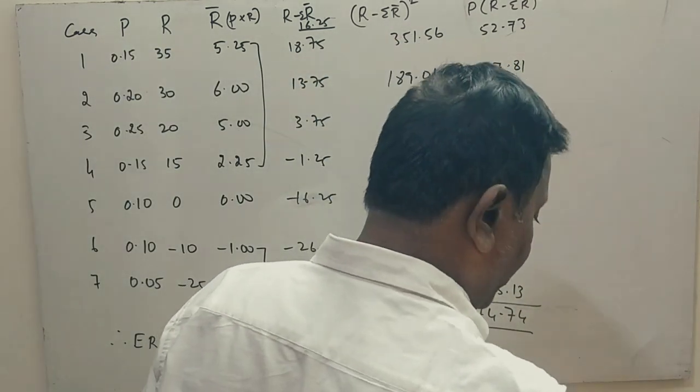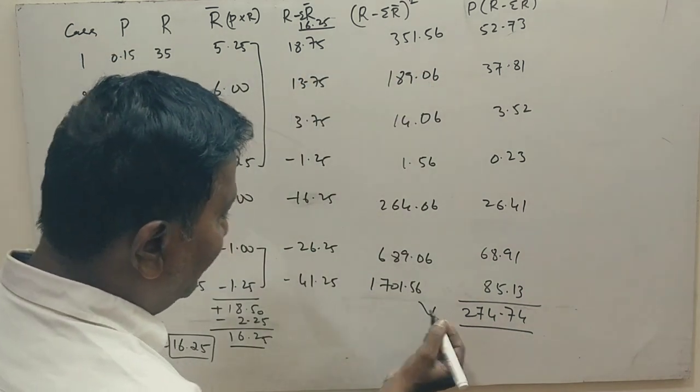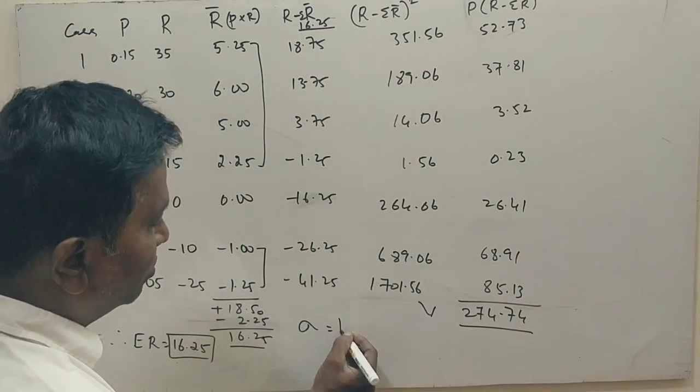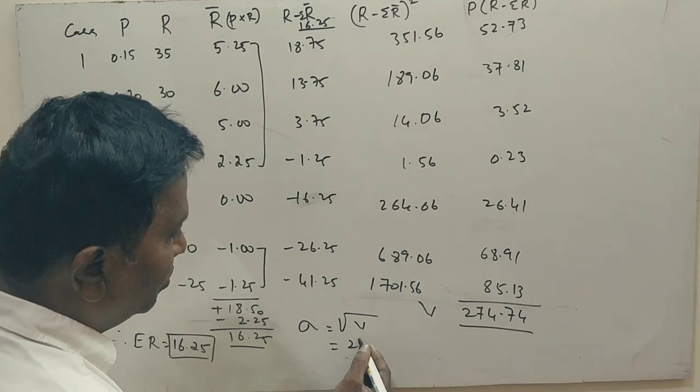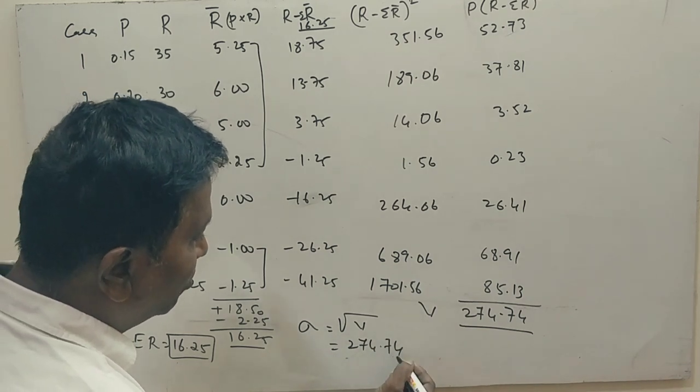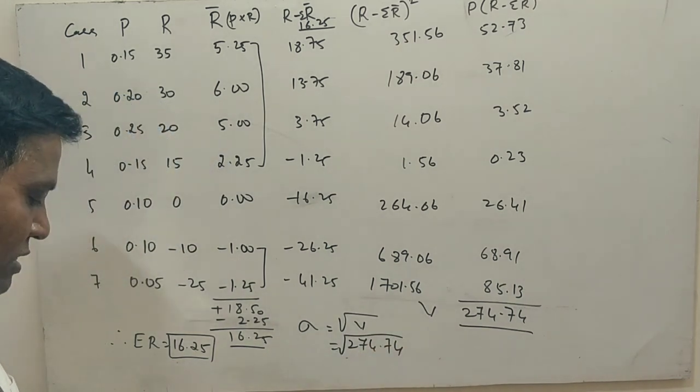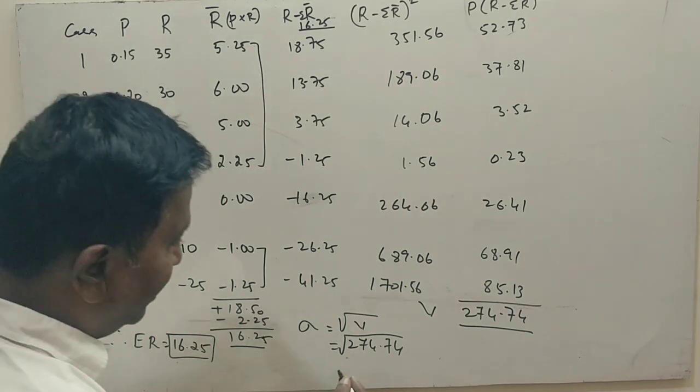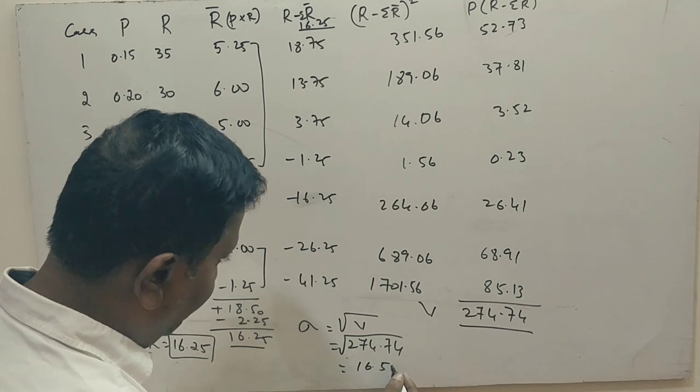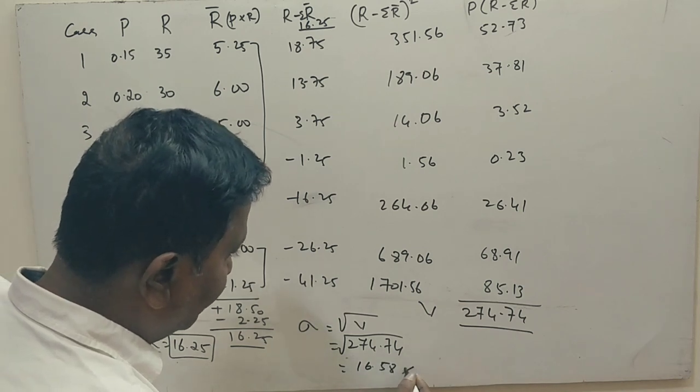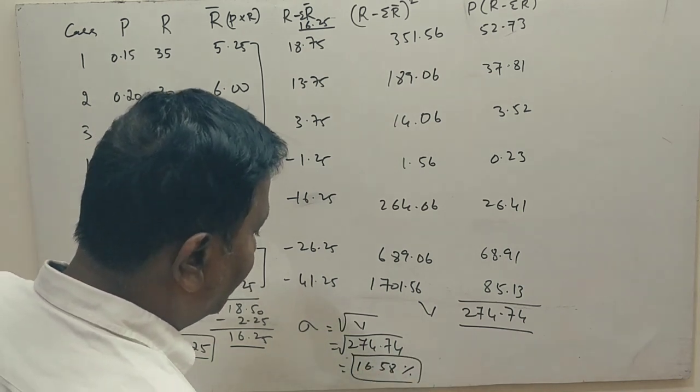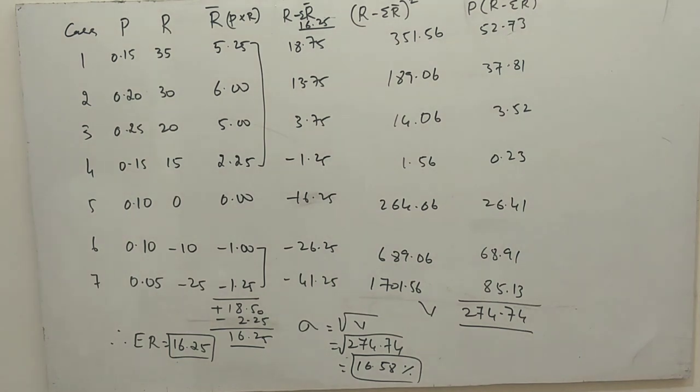Now this is called as V. Standard deviation is equals to root of V. So 274.74 root is 16.58. Right sir.